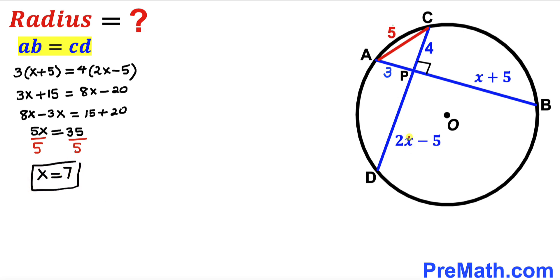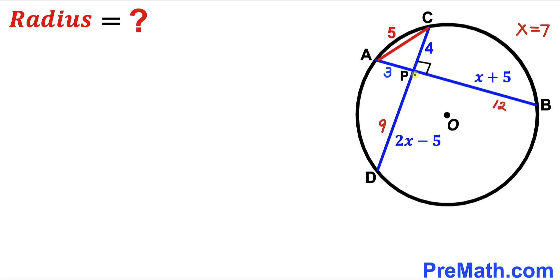Substituting X equals 7: 2 times 7 minus 5 gives us 9 units for PD. Likewise substituting X equals 7 into X plus 5: 7 plus 5 gives us 12. So BP length is 12 and PD length is 9.